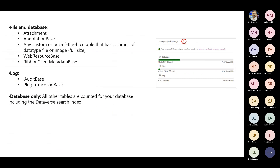The very first thing is storage capacity usage. Microsoft has divided everything into three boxes: file, log, and database. File contains attachments, annotations, any custom or system table with a data type of file or image, web resources, and Ribbon Client Meta Database — all of these go to file storage and are not counted as database. Log contains audit and plugin trace. The rest is our core database, which has all transactional data, business data, master data, and the applications we build.